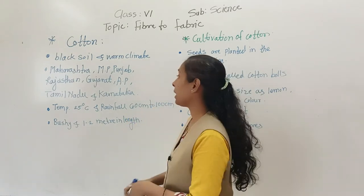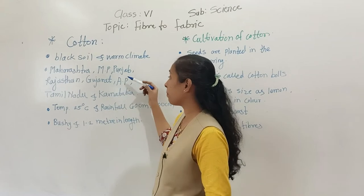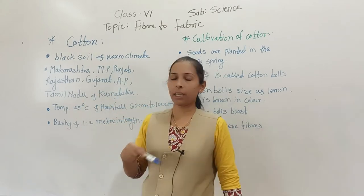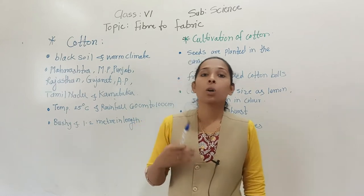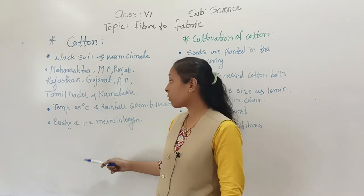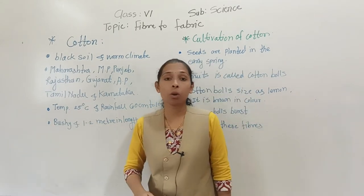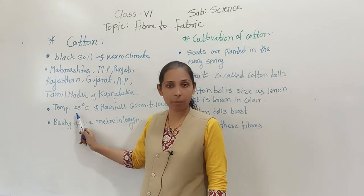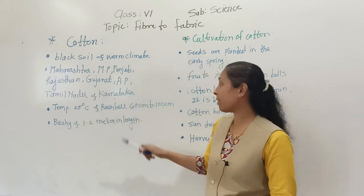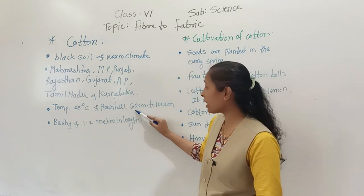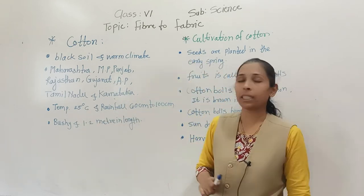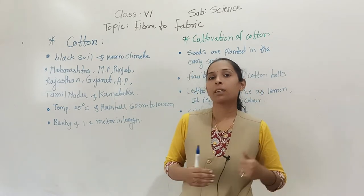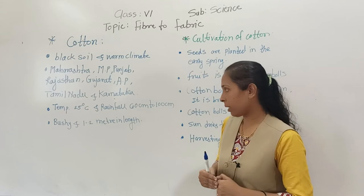In our country, cotton is cultivated in Maharashtra, Madhya Pradesh, Punjab, Rajasthan, Gujarat, Andhra Pradesh, Tamil Nadu, and Karnataka. For the proper growth of the cotton plant, the temperature required is 25 degrees Celsius, and it requires rainfall from 60 centimeters to 100 centimeters. That much rainfall is enough for the proper growth and cultivation of the cotton plant.